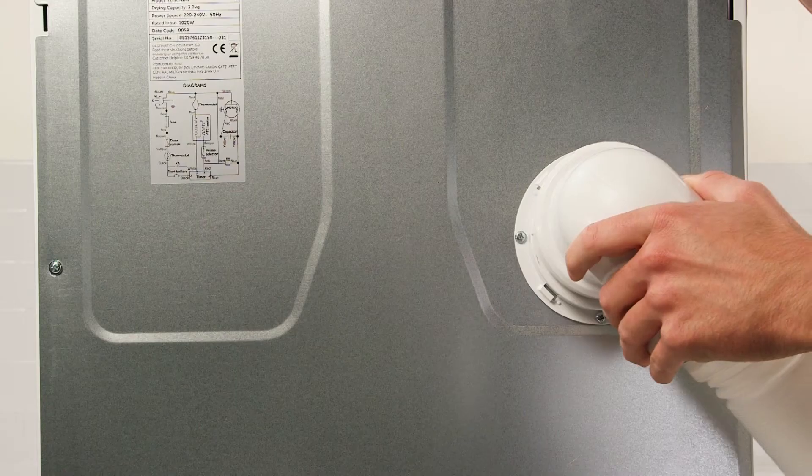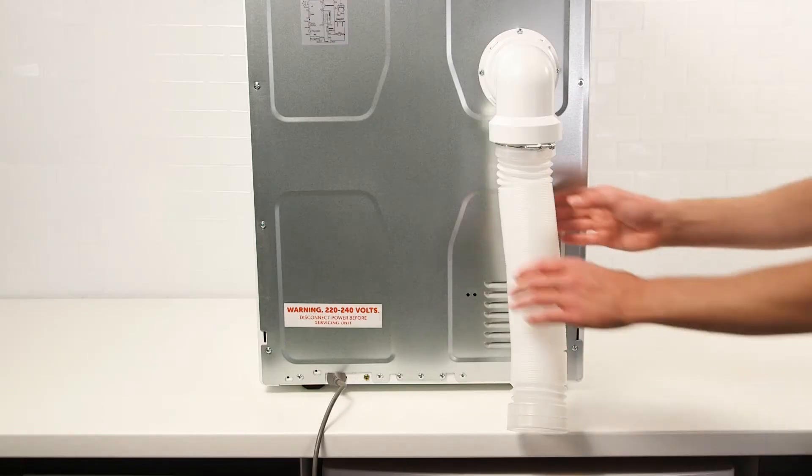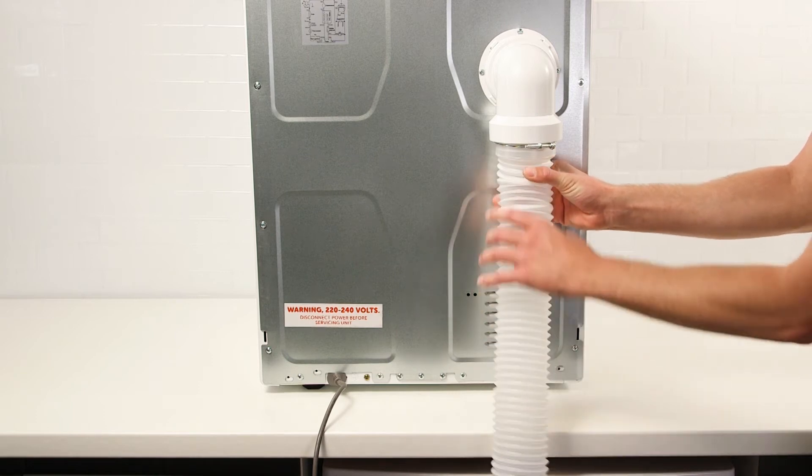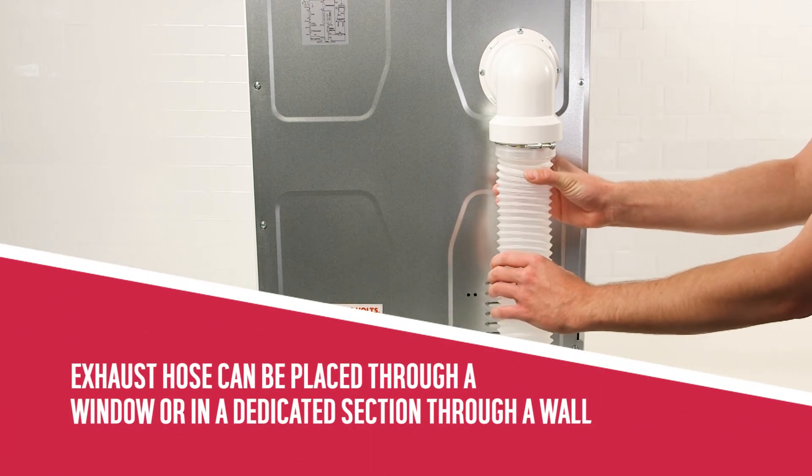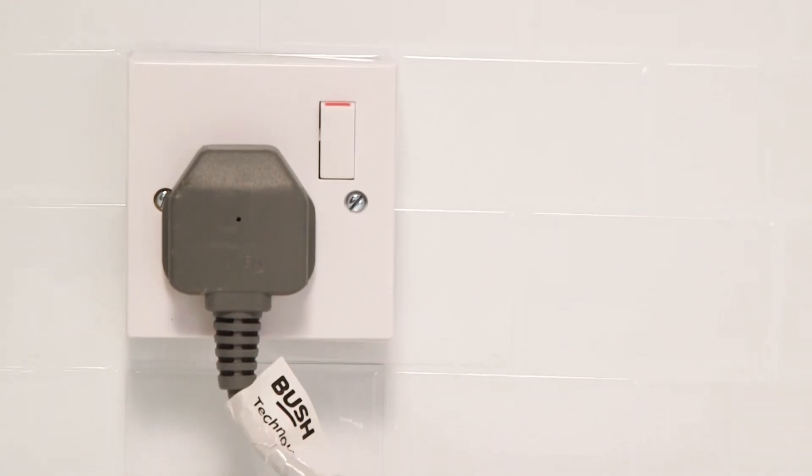Turn the exhaust hose assembly clockwise until it clamps firmly. You can now extend the exhaust hose so that it is outdoors. The hose can be placed through a window or into a dedicated section through a wall. You can now plug the tumble dryer back in.